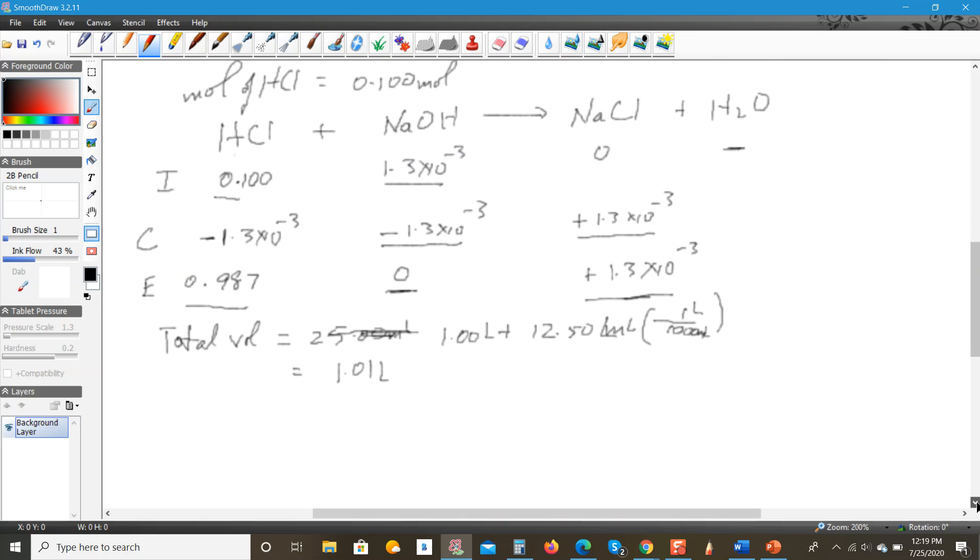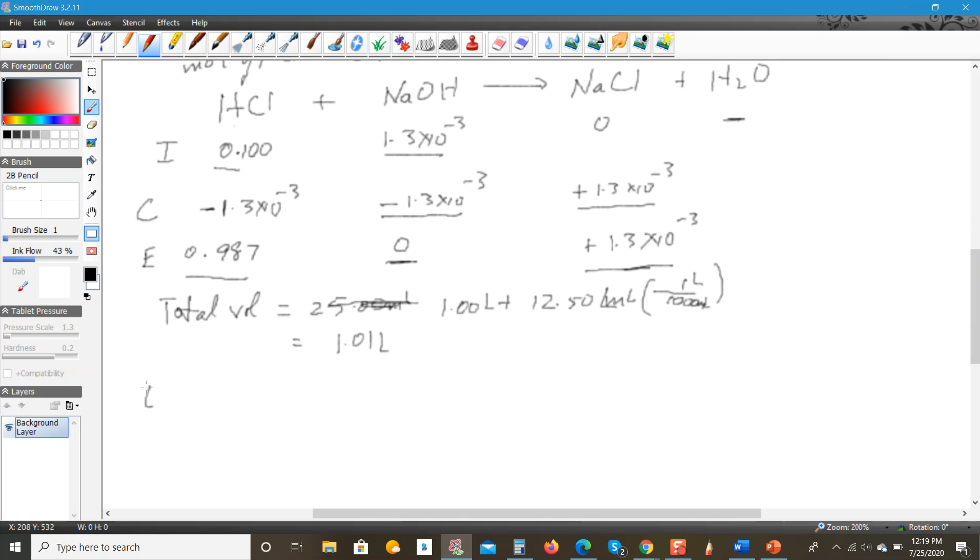Now we can find the concentration of HCl, which would be equal to the concentration of H+, because it's a strong acid. This will be equal to the moles, which is 0.0987 moles, divided by 1.01 liters. According to my calculation, this works out to be 0.0977 M, which means that the pH will be equal to -log of that number, 0.0977 M, which works out to be 1.01.